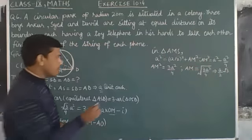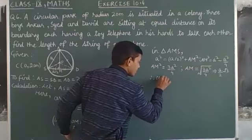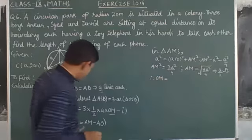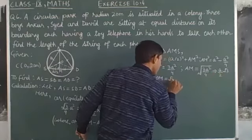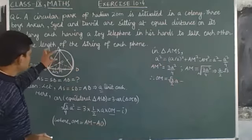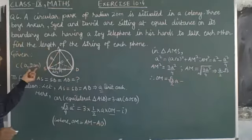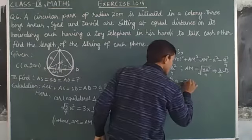Therefore, ON equals AN, which is root 3 upon 2 times 'a', minus AO. AO is the radius of the path, and that radius we are given as 20 meters, so it is minus 20.